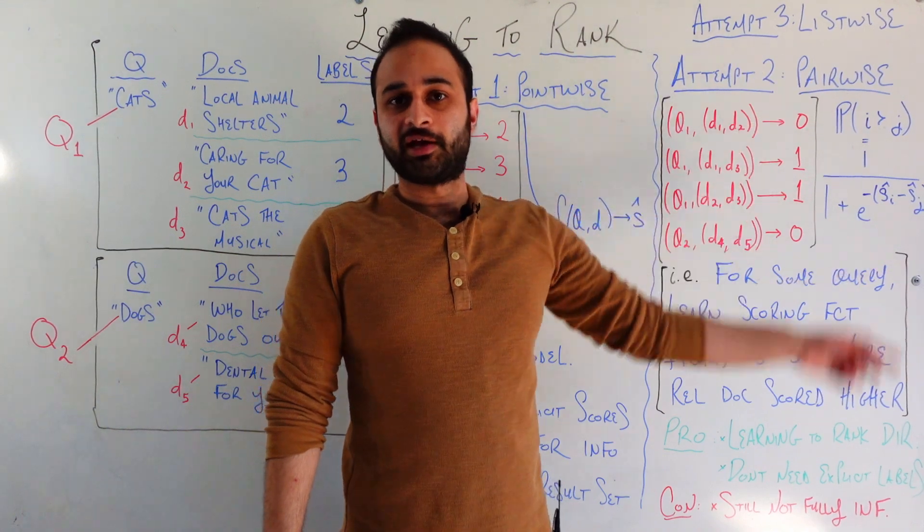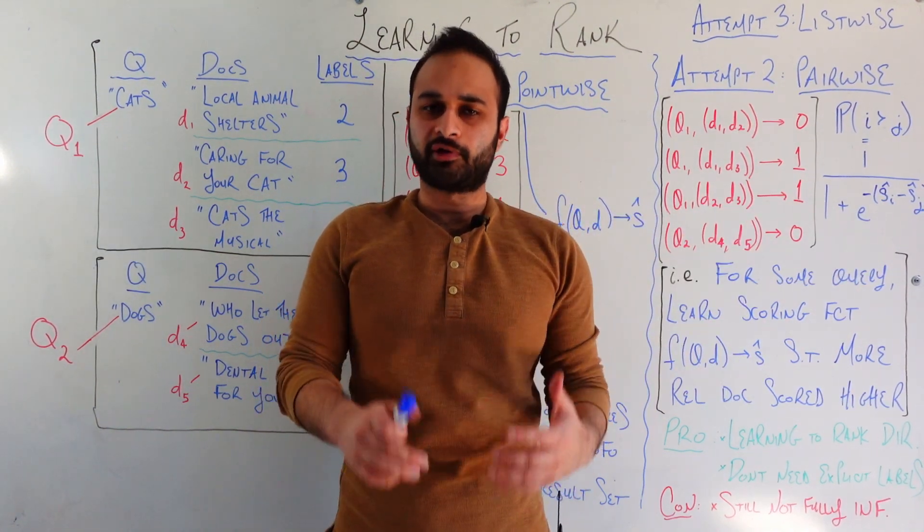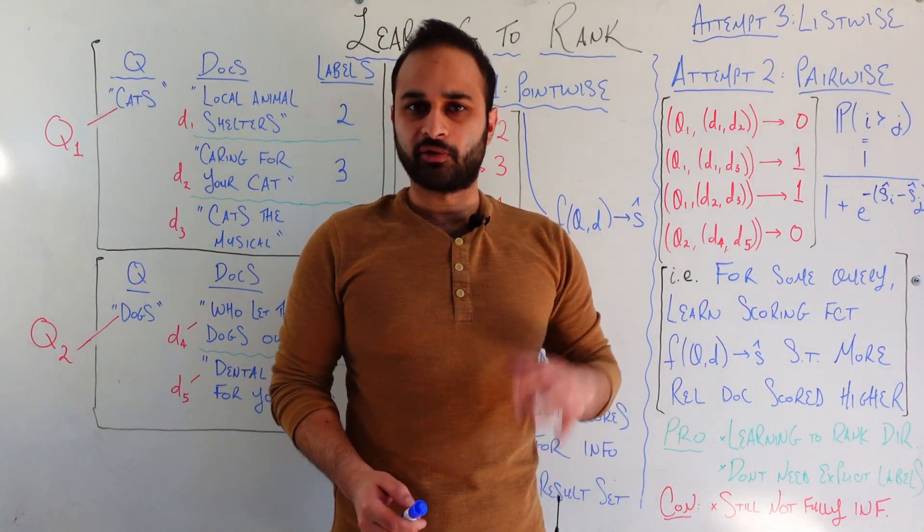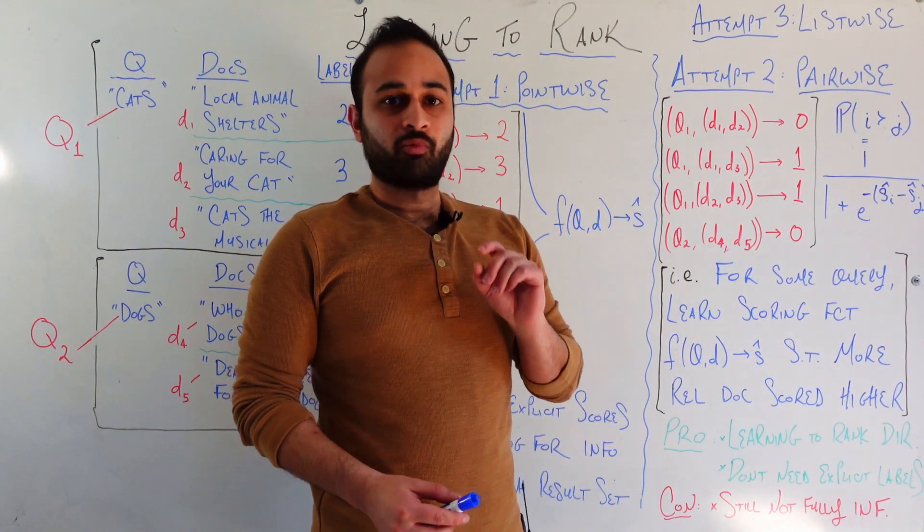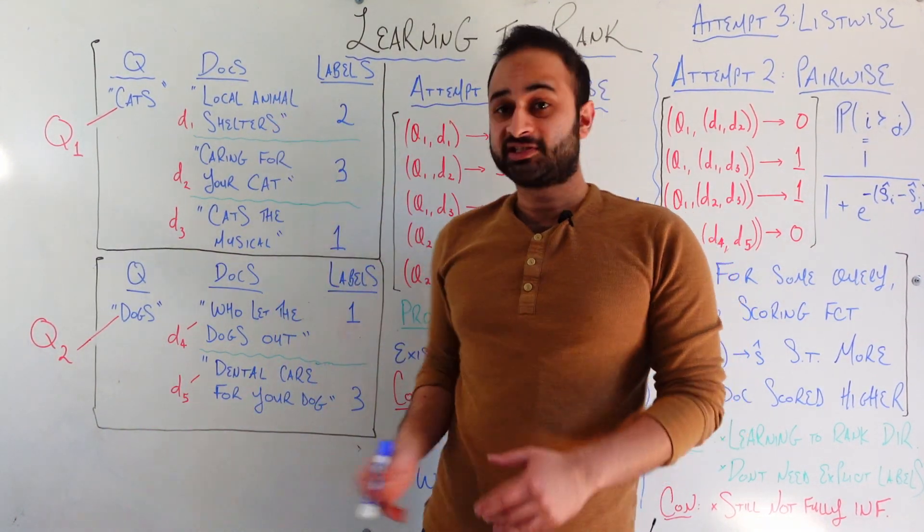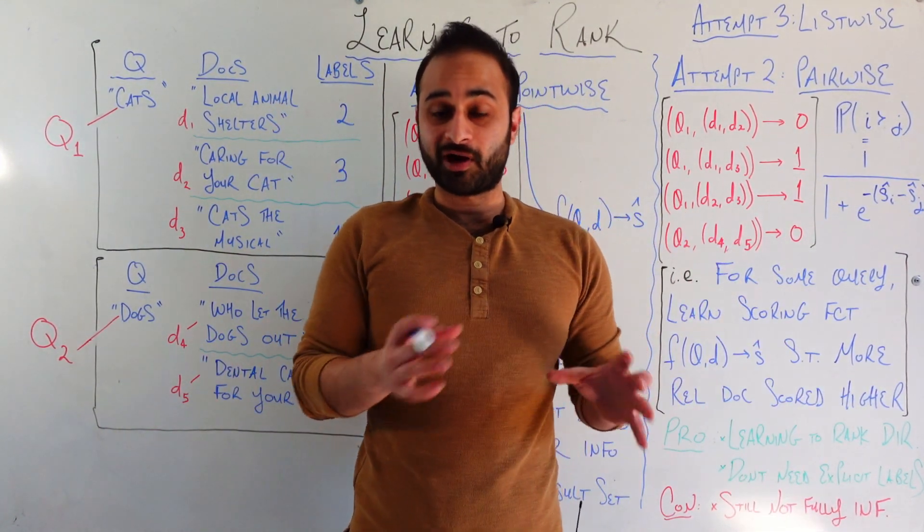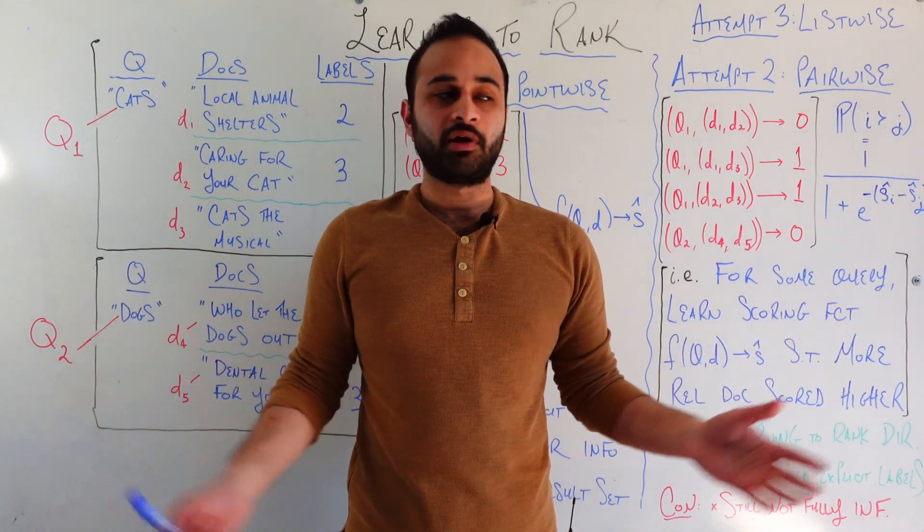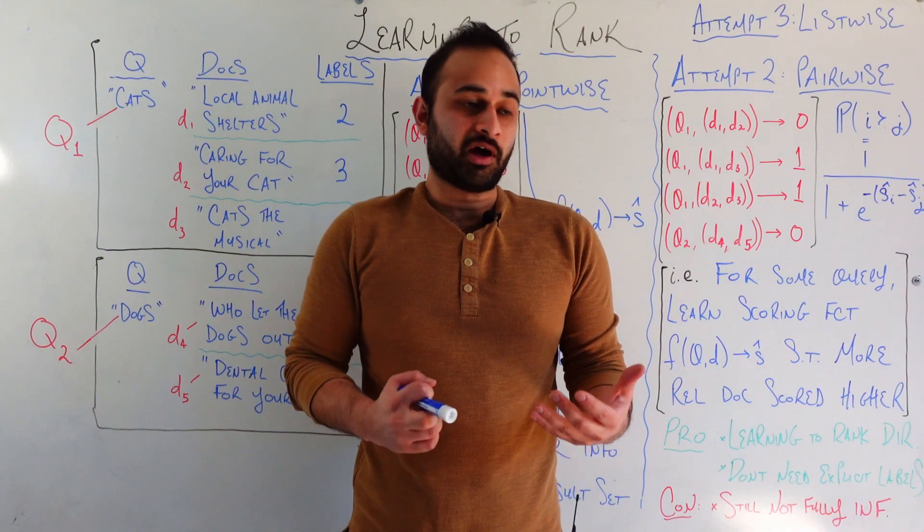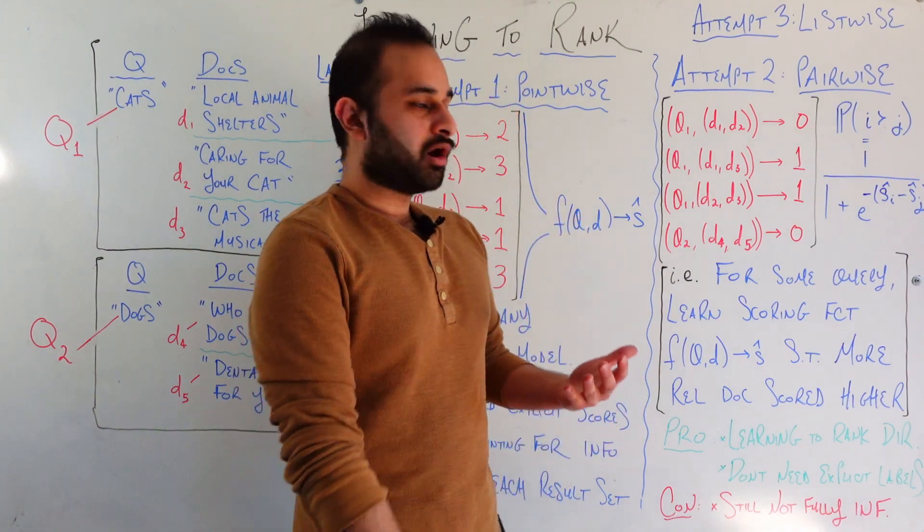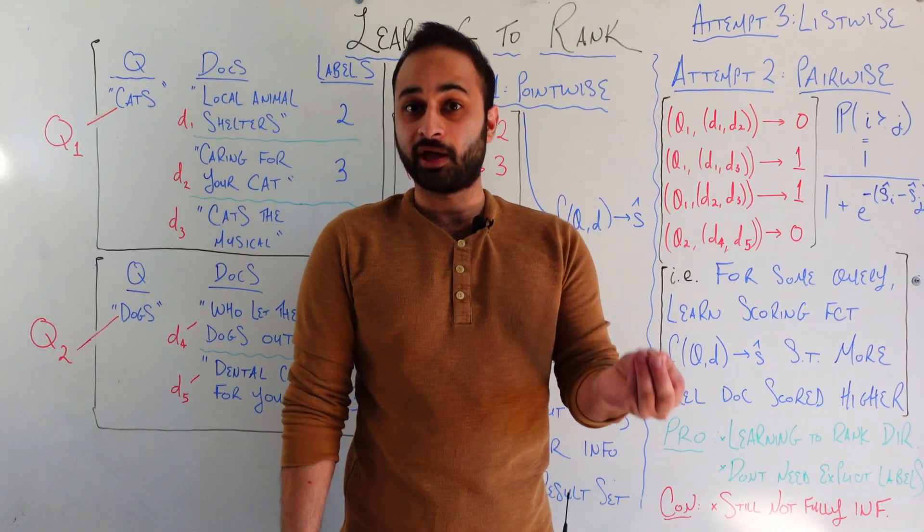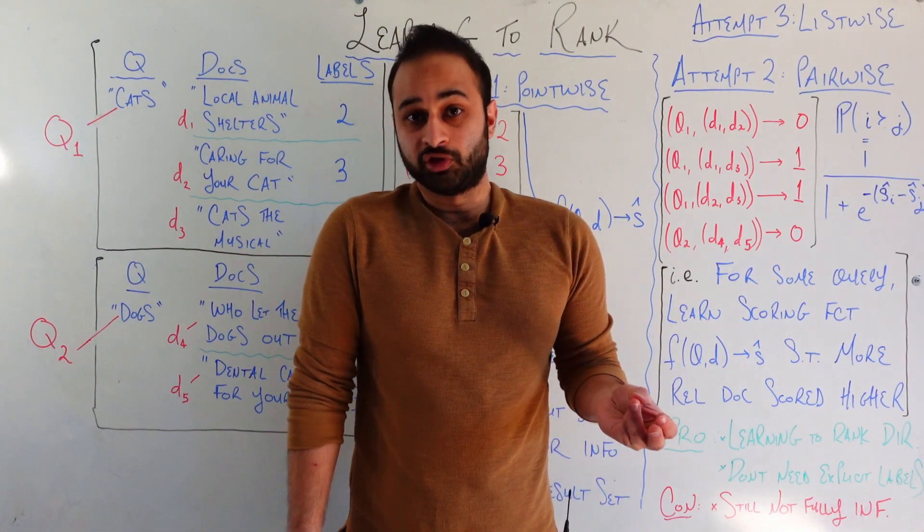And that is the next step. Those are called listwise methods, and I've chosen not to talk about them here because we've already talked about a lot in that video. If you want to talk about listwise methods, let me know in the comments below, but they are one step further and they basically take into account the entire set of documents at once, not in a pairwise fashion, but just all of them together. The pro of them is that they do this in a more theoretically sound way. The con is they're very complex. You have to do them in an efficient way.